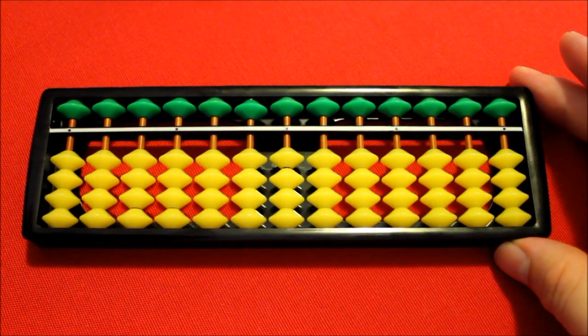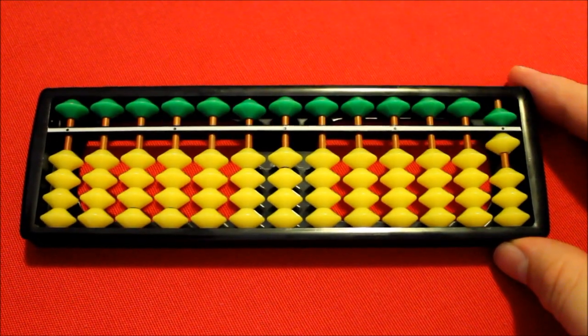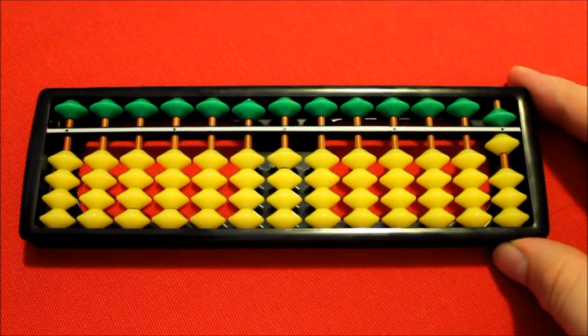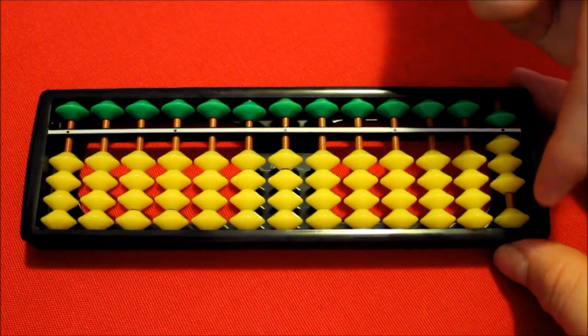In order for a bead to be counted, it needs to either be touching the bar, as is now the case with those two beads, or it needs to be as close to the bar as possible.